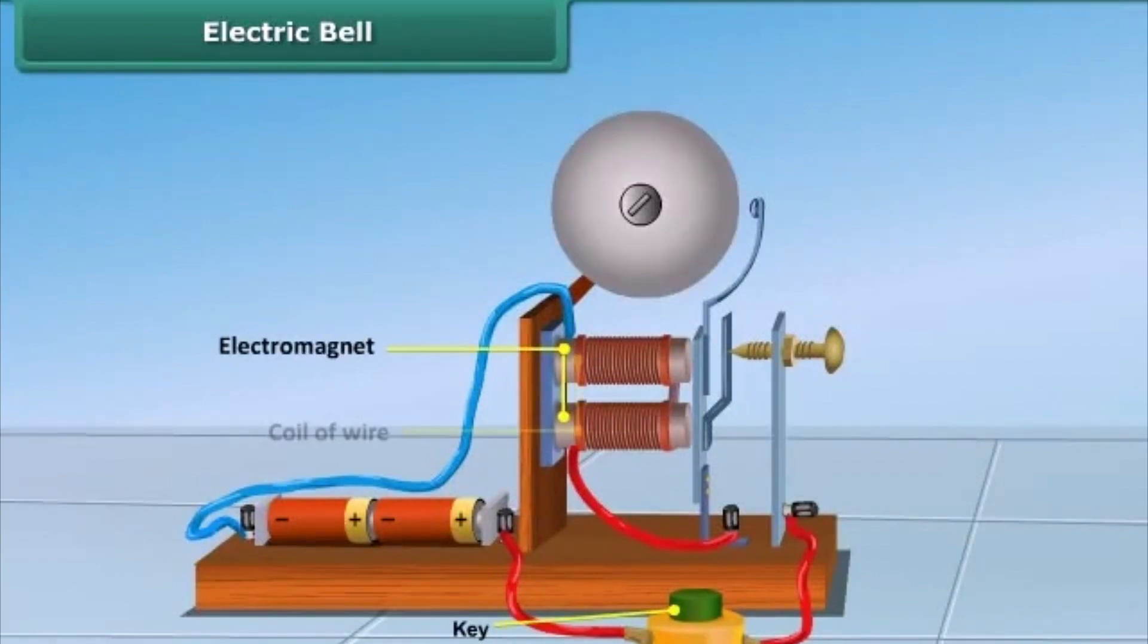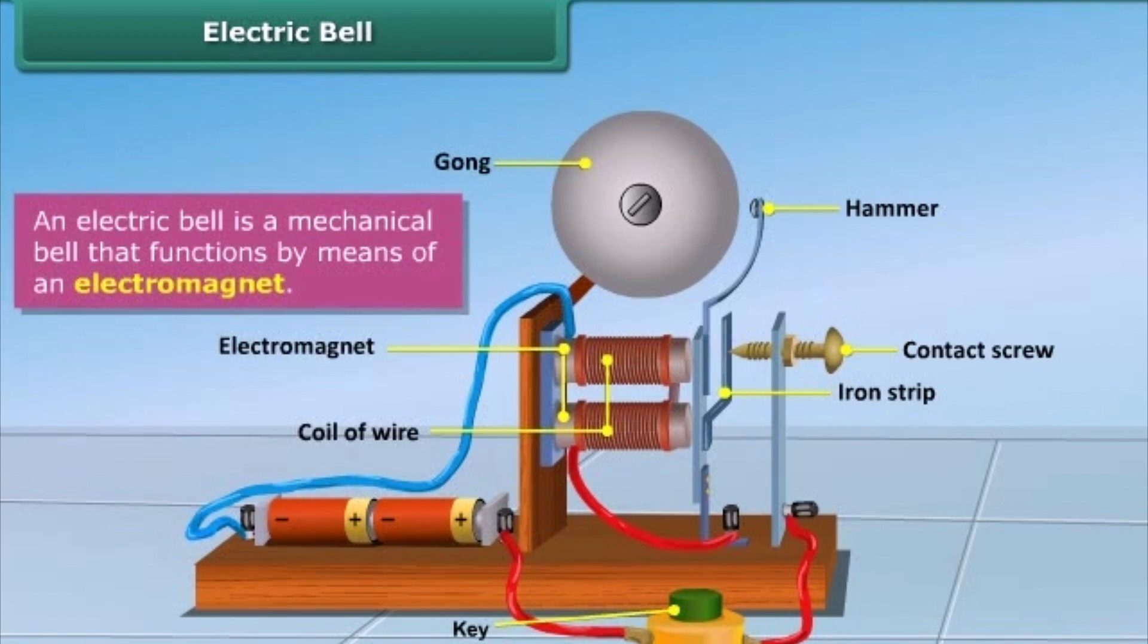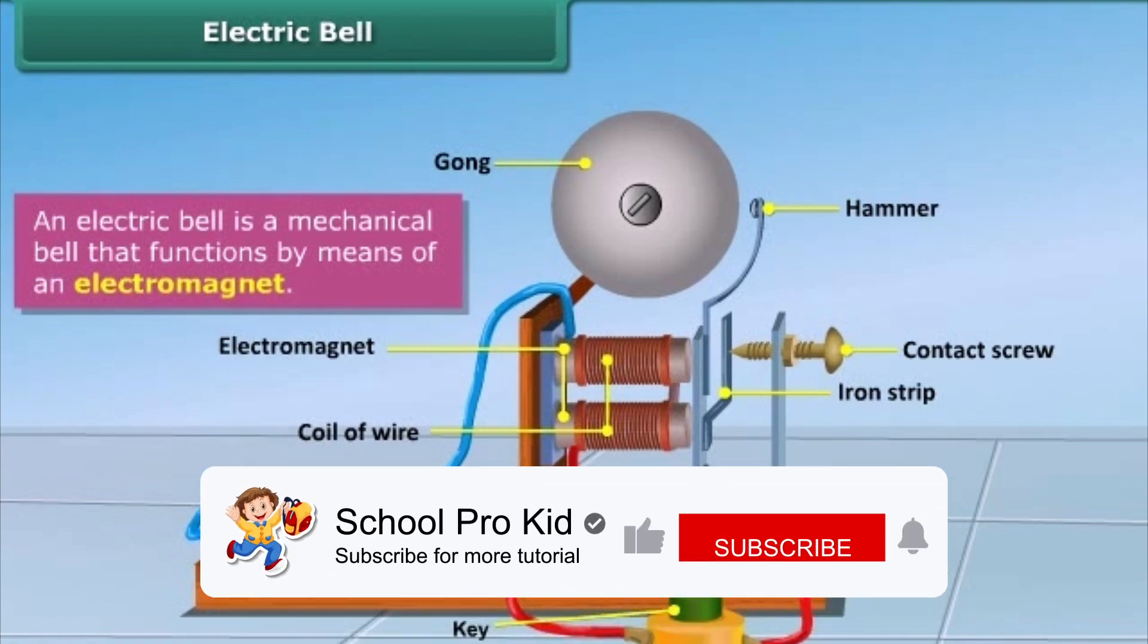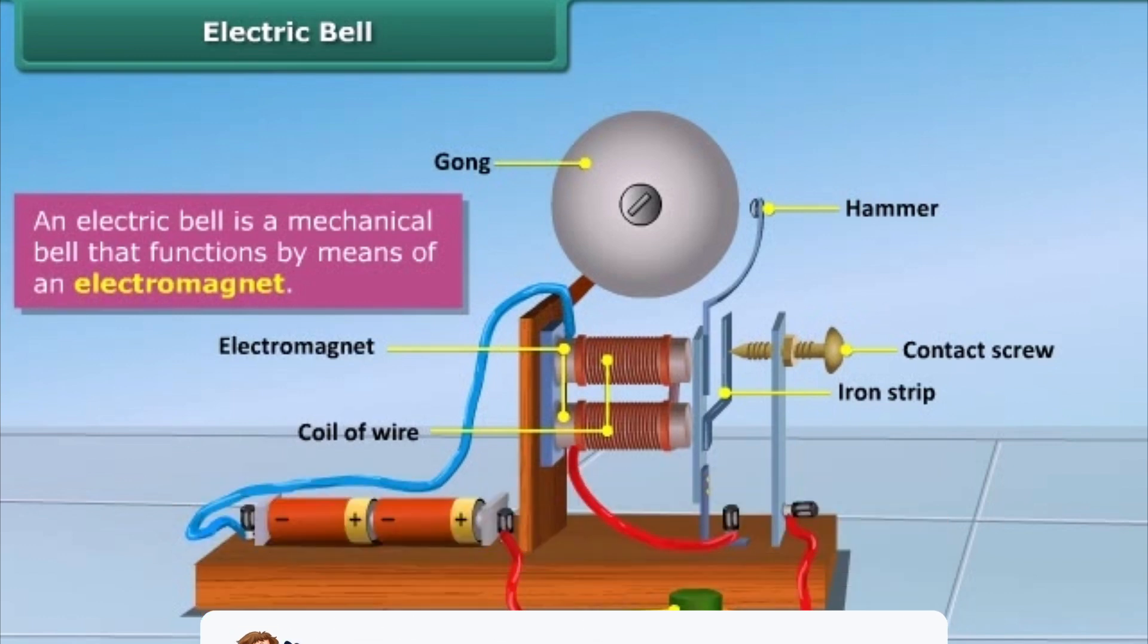Let us now look at the working of an electric bell. It functions by means of an electromagnet. The electric bell consists of a coil of wire wound on an iron piece. The coil acts as an electromagnet. An iron strip with a hammer at one end is kept close to the electromagnet.